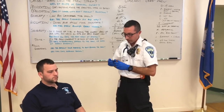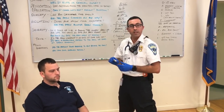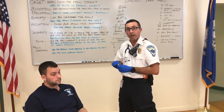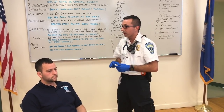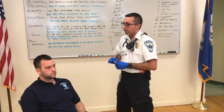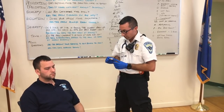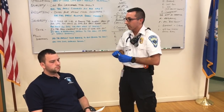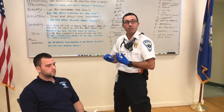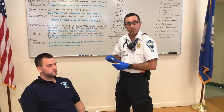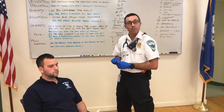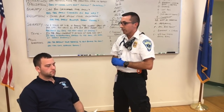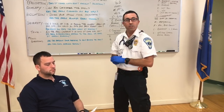Next, we give nitroglycerin. Before administering, confirm the patient hasn't taken erectile dysfunction medications — Levitra, Cialis, or Viagra — within 24 to 48 hours. Confirm blood pressure is greater than 100 systolic. Check date, dose, right patient, right medication. Give one tablet sublingual — under the tongue. After that, reassess the patient every five minutes to monitor for changes.